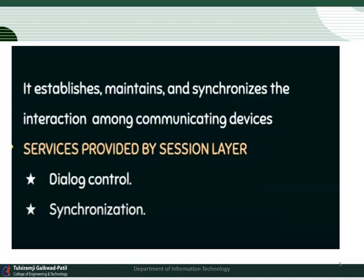In dialogue control, if two devices want to communicate with each other, the processes in these devices also want to communicate. This communication can be done either in a half-duplex way, which is one-way communication, or in a full-duplex way, which is two-way communication. This type of activity is called dialogue control.